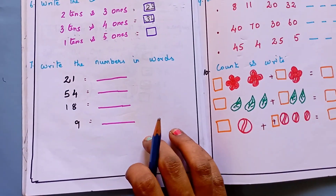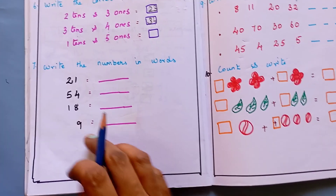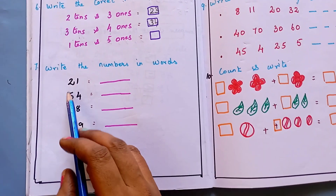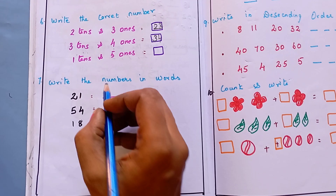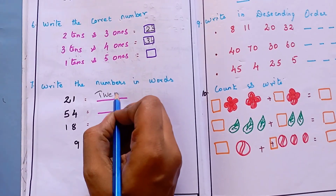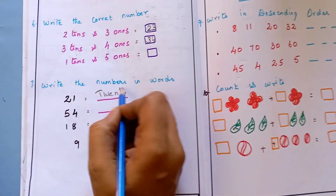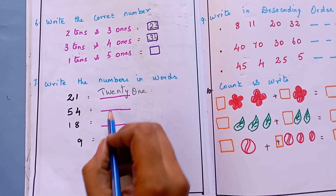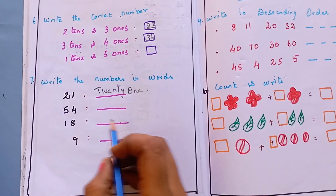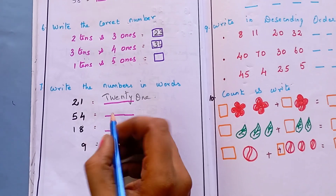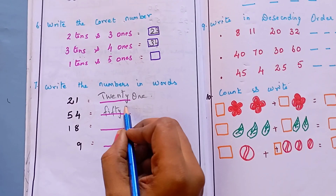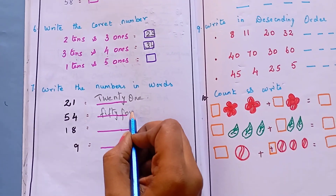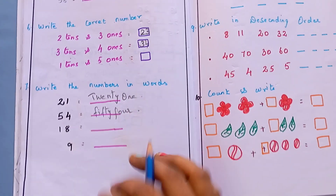The next question is: write the number in words. I have given the number and they have to write it in words. So this is 21 — they write TWENTY ONE. Then 54 — they write FIFTY FOUR. Like this, they have to write the numbers in words.